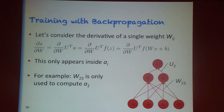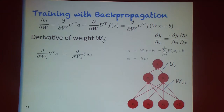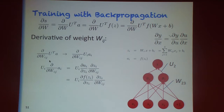Now suppose we want to calculate the derivative with respect to a particular weight element w_{ij} in the weight matrix. For example, weight w_{2,3} only feeds into being multiplied by u_2 in the final part of computing the score. So the derivative of the score with respect to w_{ij} is the derivative of u_i * a_i, because that's the only place where w_{ij} appears. We can bring u_i up front as a constant.